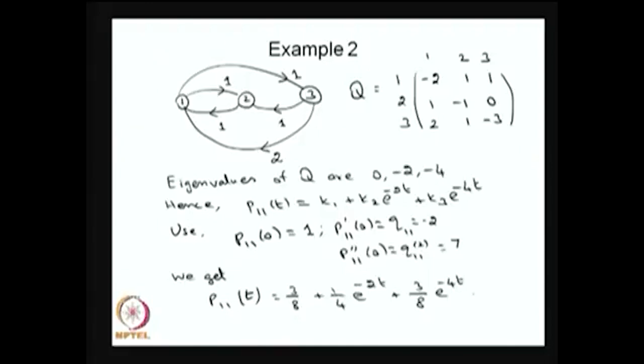The corresponding Q matrix is a 3×3 matrix. All row sums are going to be 0, and the diagonal elements are the negative of the sum of other values in the same row. Other than the diagonal elements, the values are greater than or equal to 0.